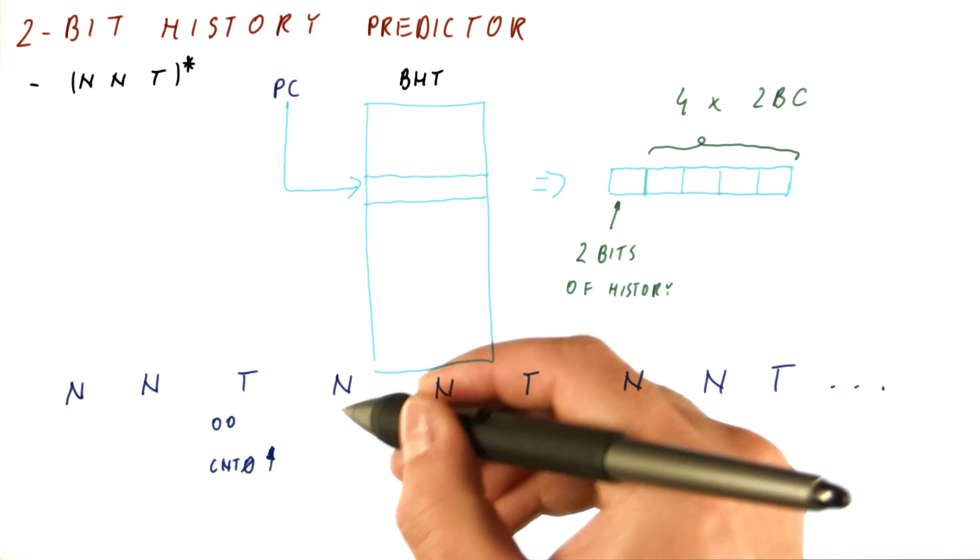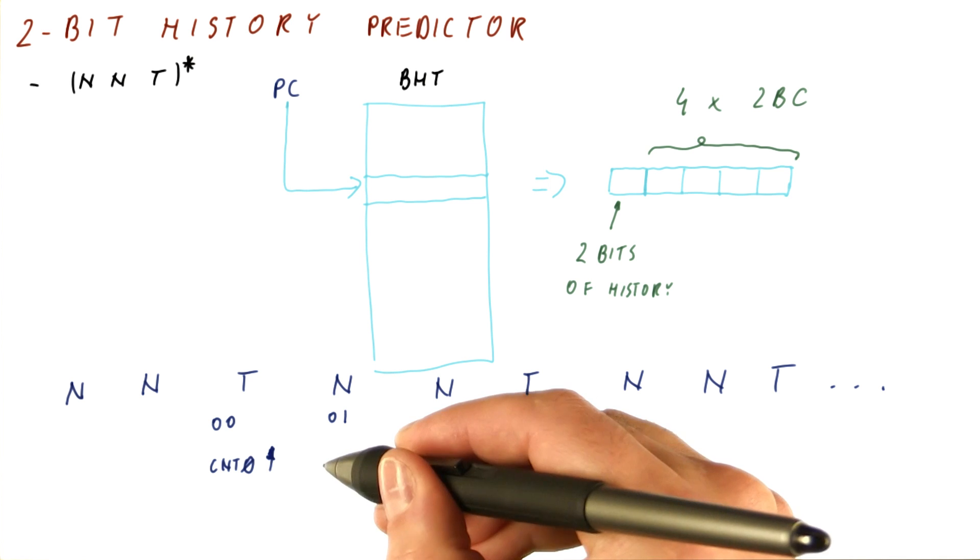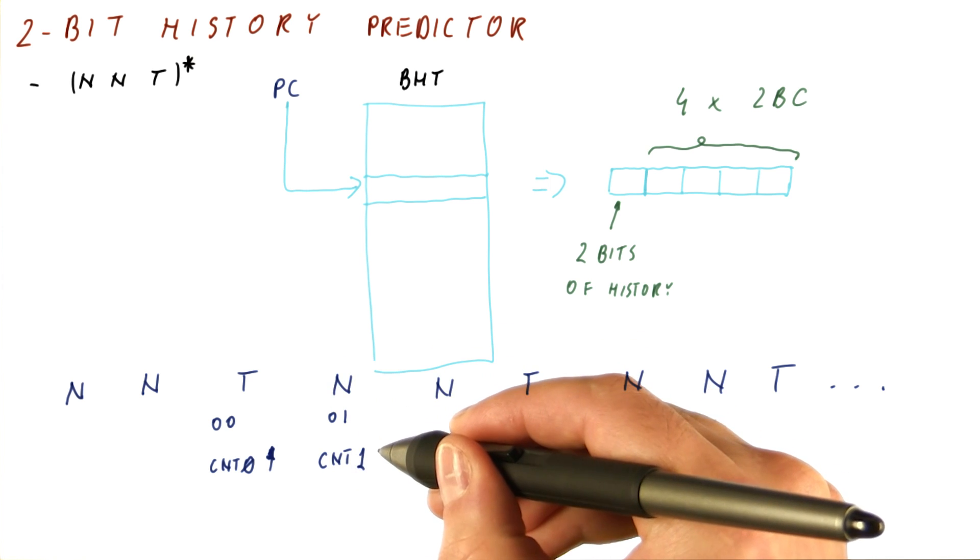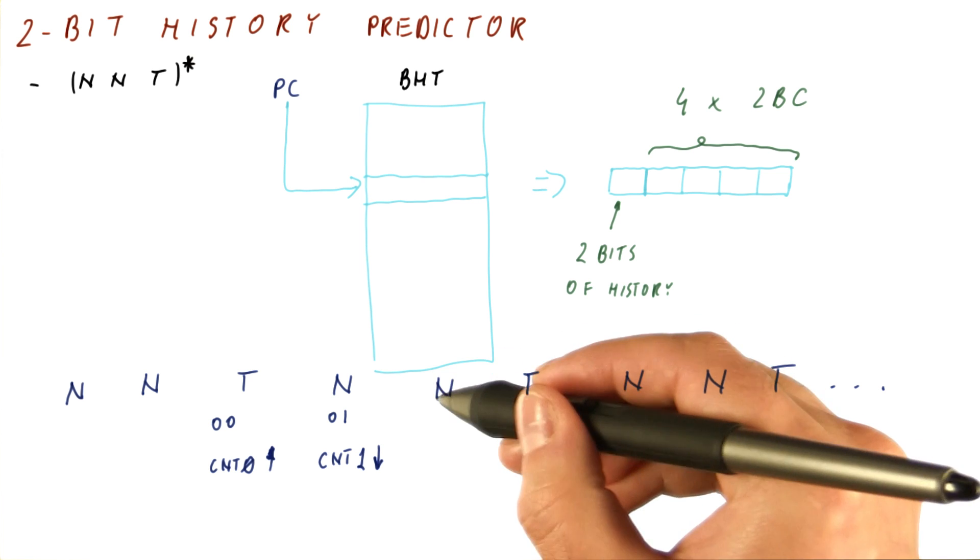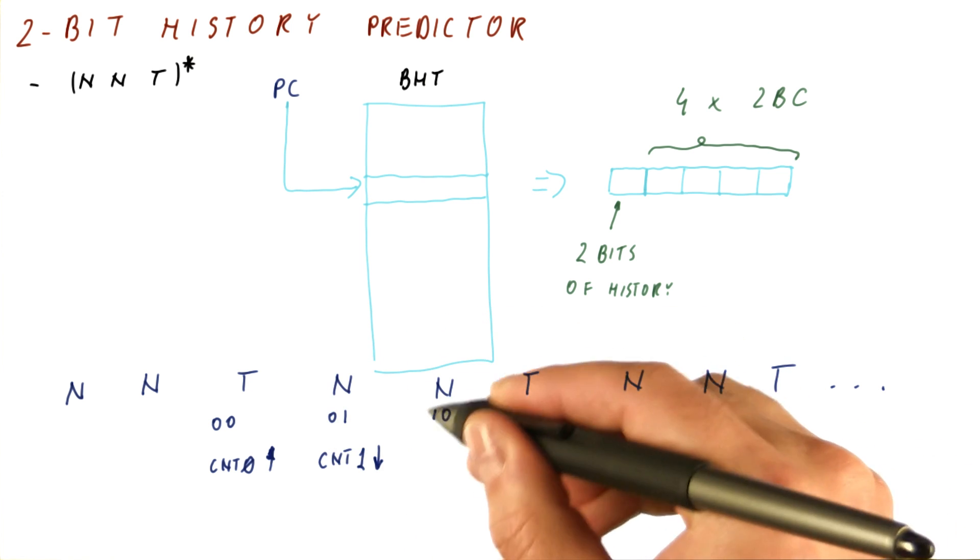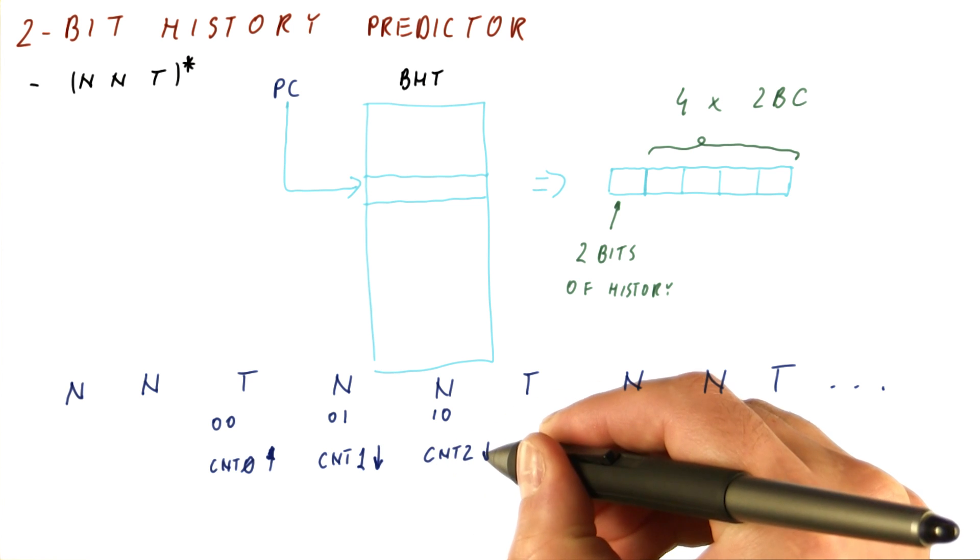When we are trying to predict this particular outcome, our history will be 0, 1. We will be using counter number 1, and we will decrement it because we are seeing a not-taken decision. When we are trying to predict this, the history will be 1, 0. This corresponds to counter number 2, which will also be decremented.